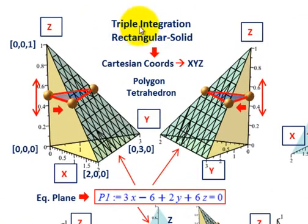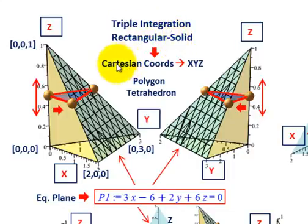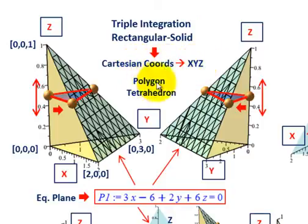What we're going to be going over here is a triple integral or triple integration of a rectangular solid. We're going to do it in terms of Cartesian coordinates — that is X, Y, Z coordinates. We're going to be looking at a simple polygon here as a tetrahedron, and really it's a simple tetrahedron.